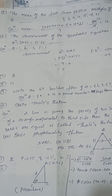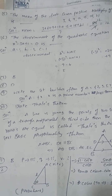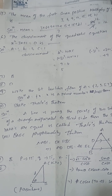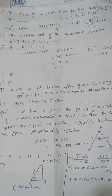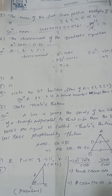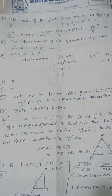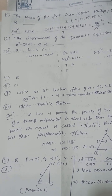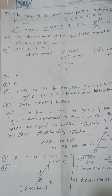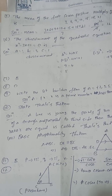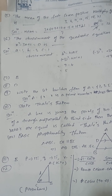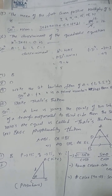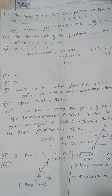The discriminant of the quadratic equation x squared minus 3x plus 1 equals 0. Here a = 1, b = -3, c = 1. Discriminant formula is b squared minus 4ac: (-3)² minus 4 × 1 × 1 = 9 minus 4, that equals 5.